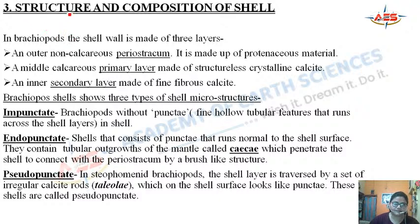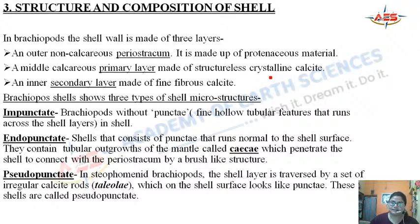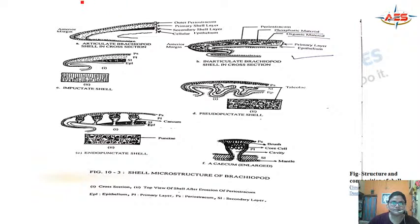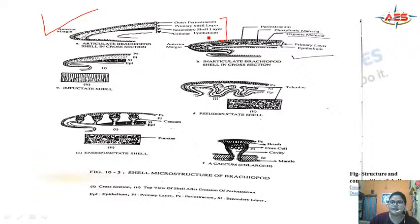The structure and composition of the brachiopod shell has three layers: the outer non-calcareous periostracum made of proteinaceous material, the middle primary layer made of structureless crystalline calcite, and the inner secondary layer made of fine fibrous calcite. Below these is the cellular epithelium that secretes the shell.